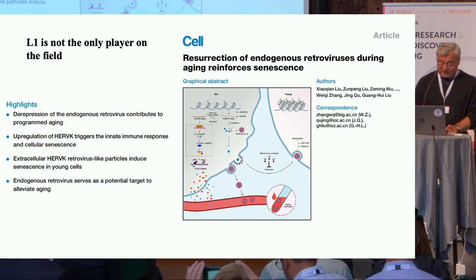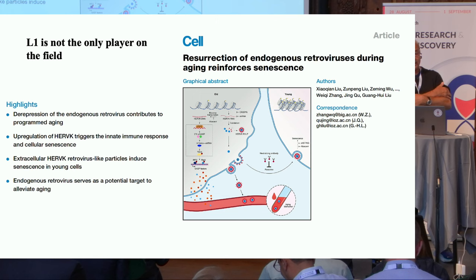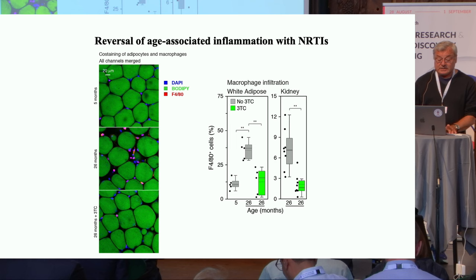LINE-1 is not the only player in the field. Wang Hui Liu has recently published a really provocative paper showing that presumably dead LTR retrotransposons in humans can become transcriptionally upregulated in senescent cells and contribute to the senescent phenotypes.